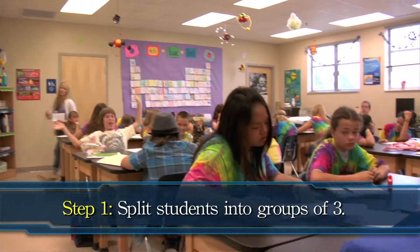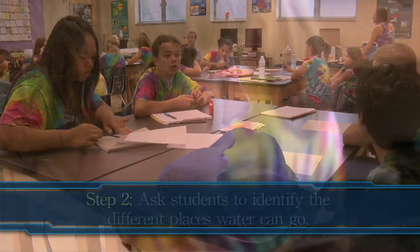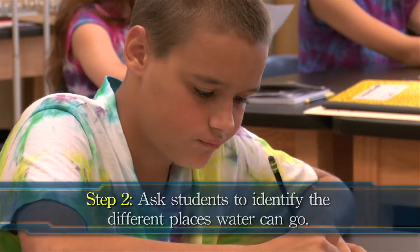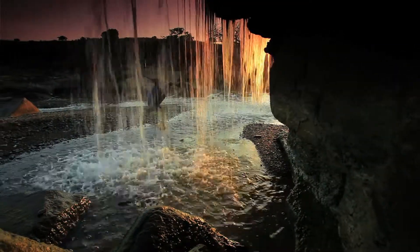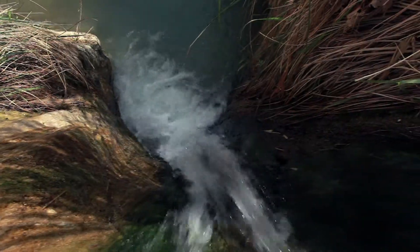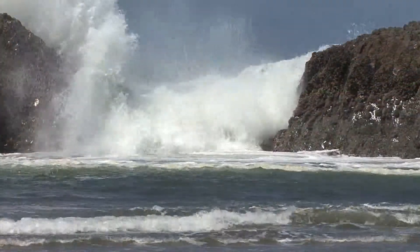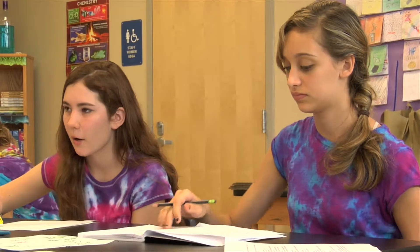Now onto the lab. Group students into teams of three. Ask them to identify the different places water can go as it travels around earth. Tell the students that they have a drop of water that longs to travel — it wants to see new places and experience the different phases that water can take. They need to state where the water drop starts and list the possible paths it can follow, and identify what the phase changes are as well. Then call upon groups to present the journey of the water drop to the class.